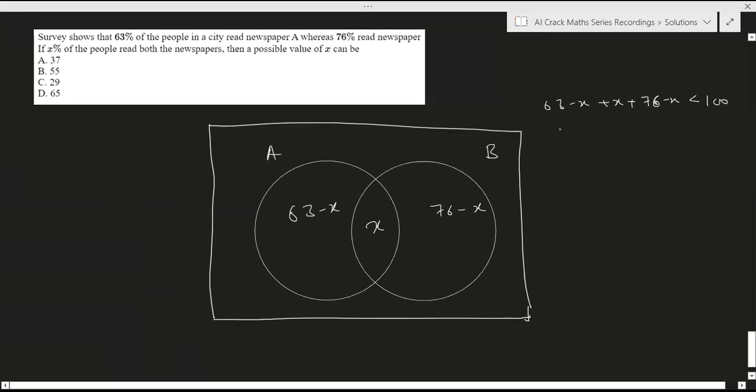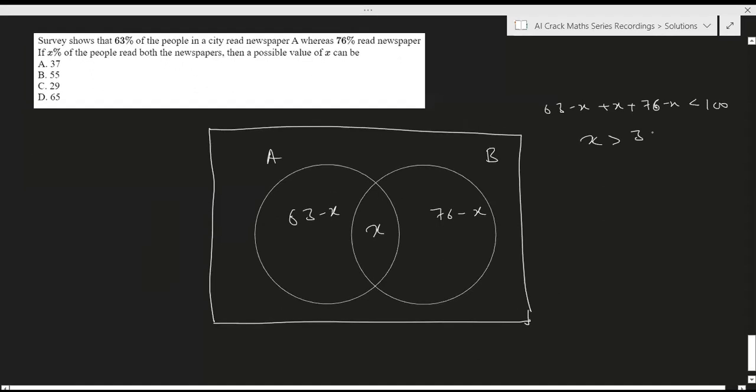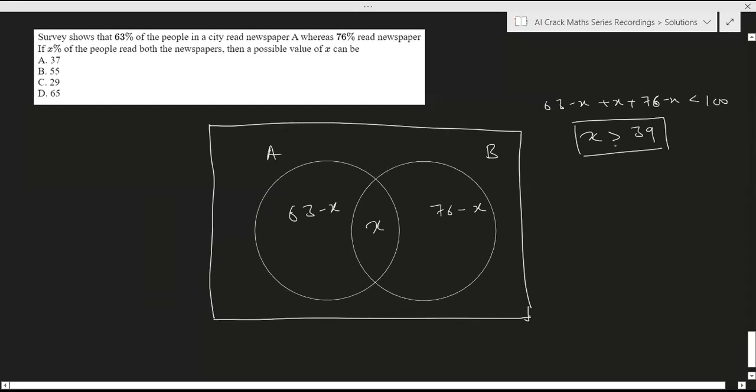So now this boils down to X should be greater than 39. If you solve this inequality then you'll get X greater than 39.